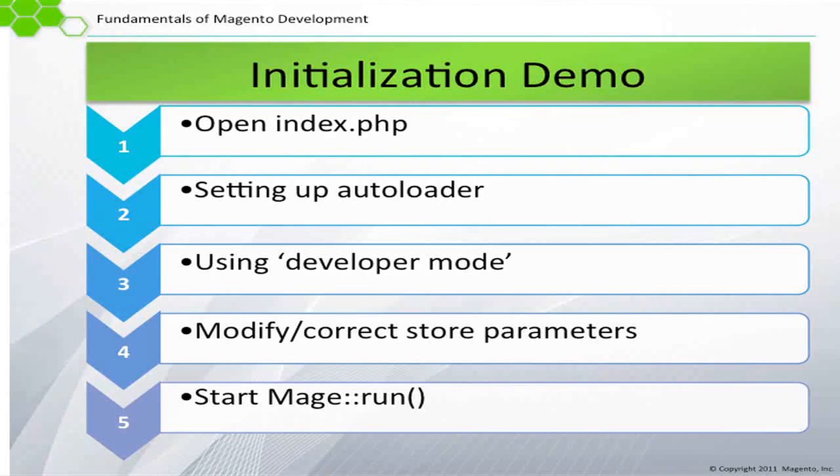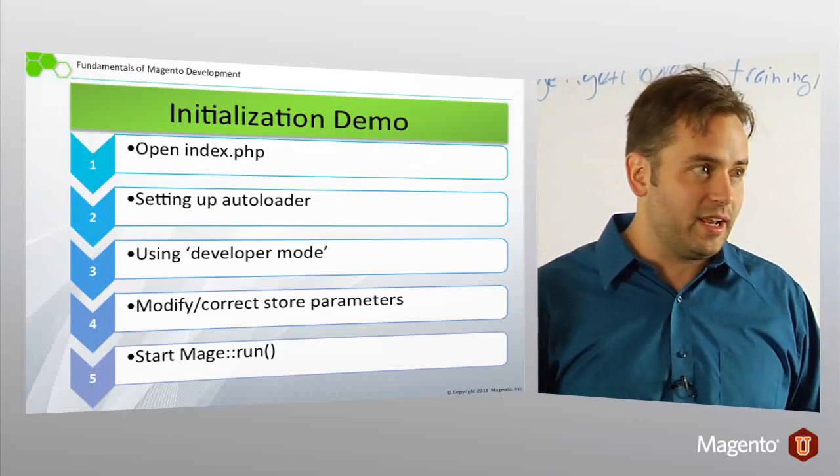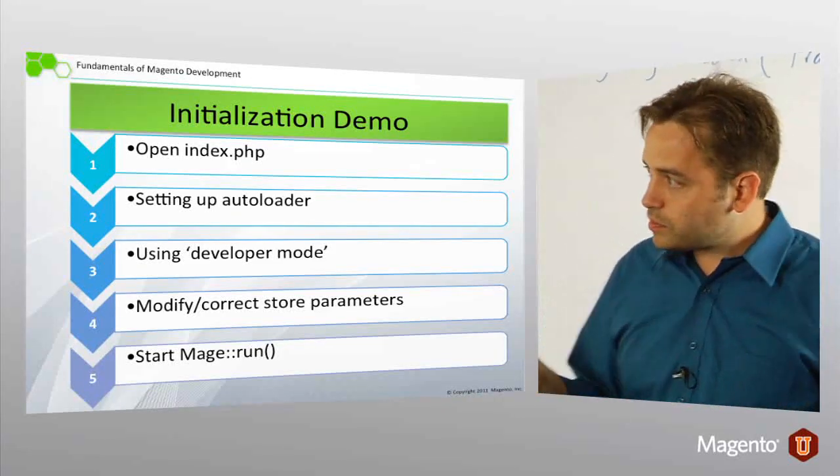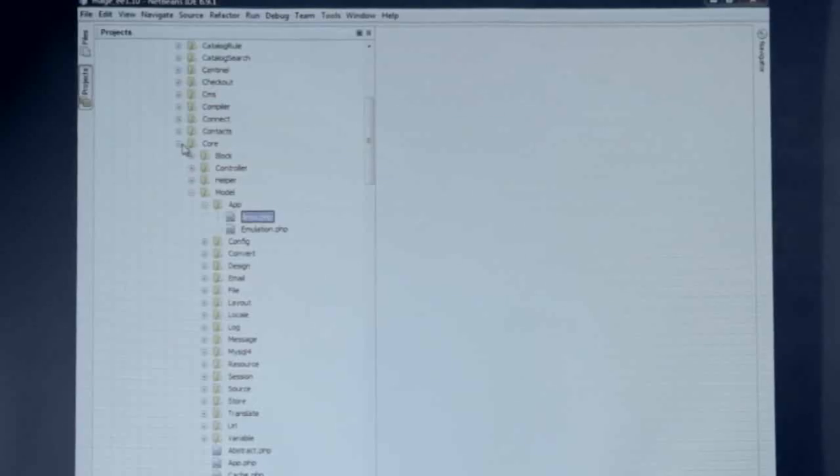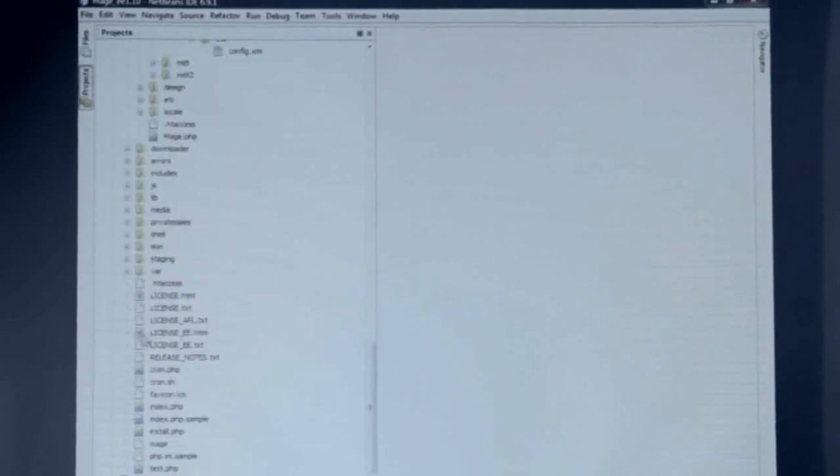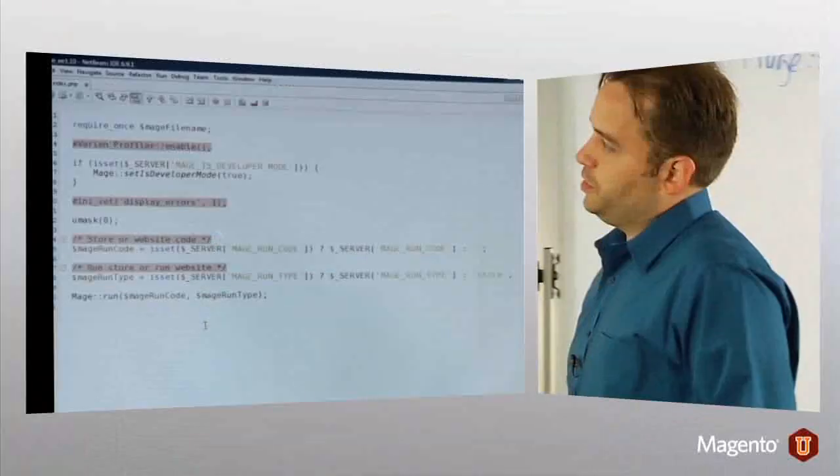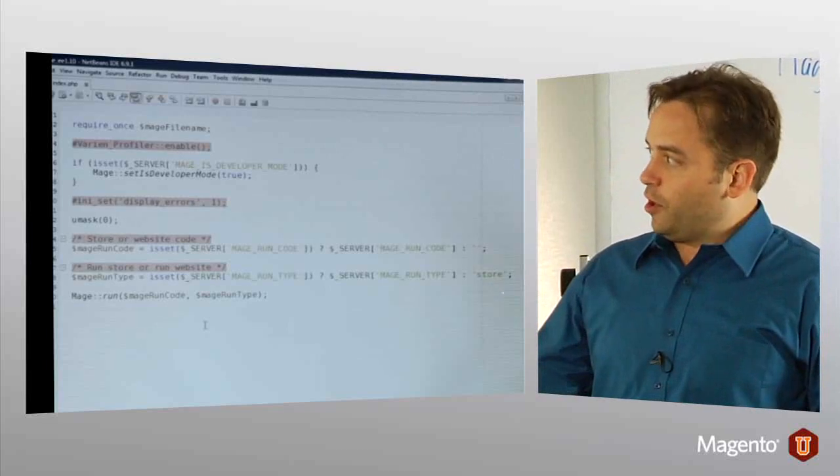Okay, we've actually done pretty much all of these. We've already opened up index.php. We've looked at the autoloader. You remember from yesterday, variant autoload class. If you just want to look at how that works, it's all right in there. We enabled developer mode. What we haven't done so far is looked at store parameters. One of the things that we saw in the index.php file was this chance for evaluating store scope or website scope.